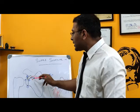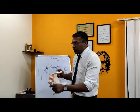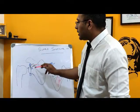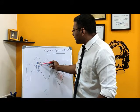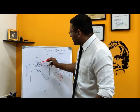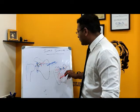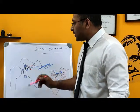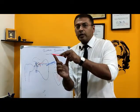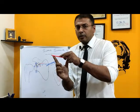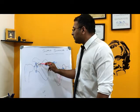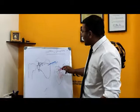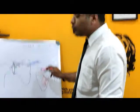The suprascapular nerve enters the shoulder — that is the bony part, the scapula — through a small notch. This is a small U-shaped cut in the scapula. The notch is covered on its upper side by a ligament called the suprascapular ligament, shown here as a black band. The nerve then passes through and comes down, supplying the supraspinatus muscle.